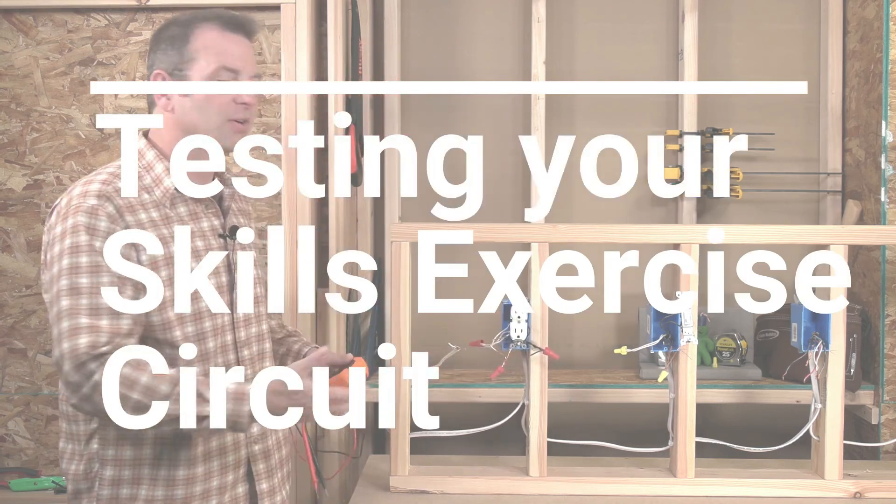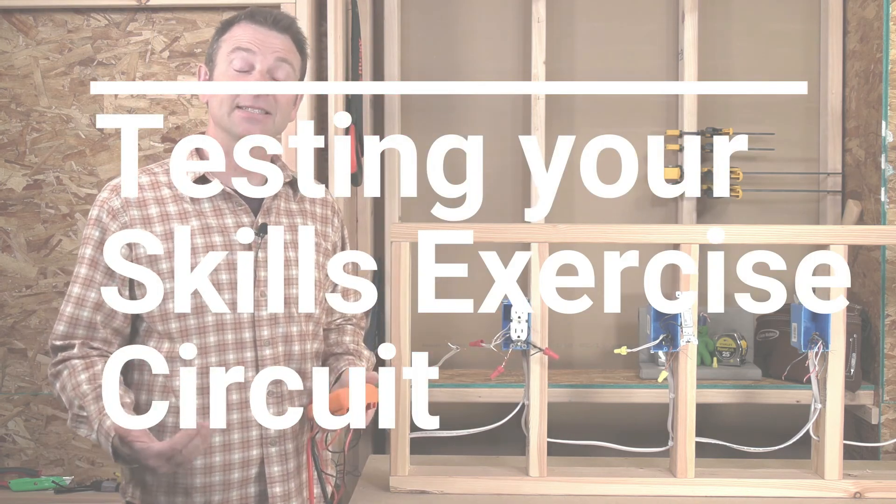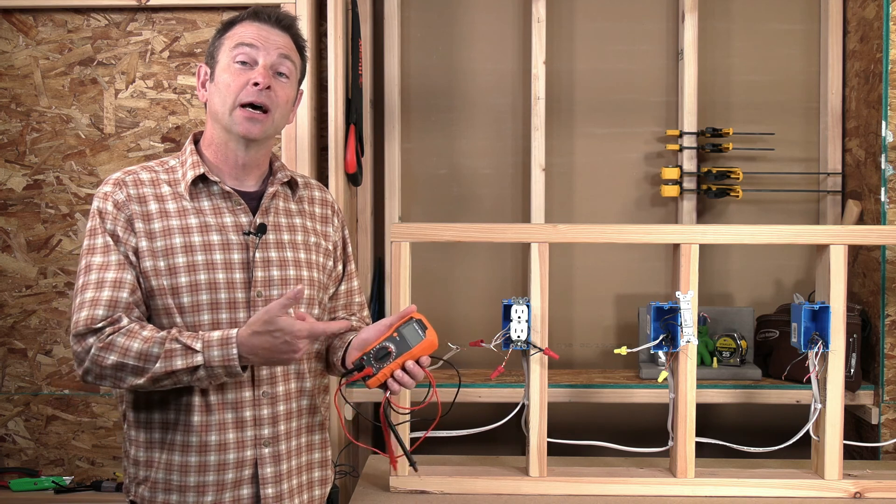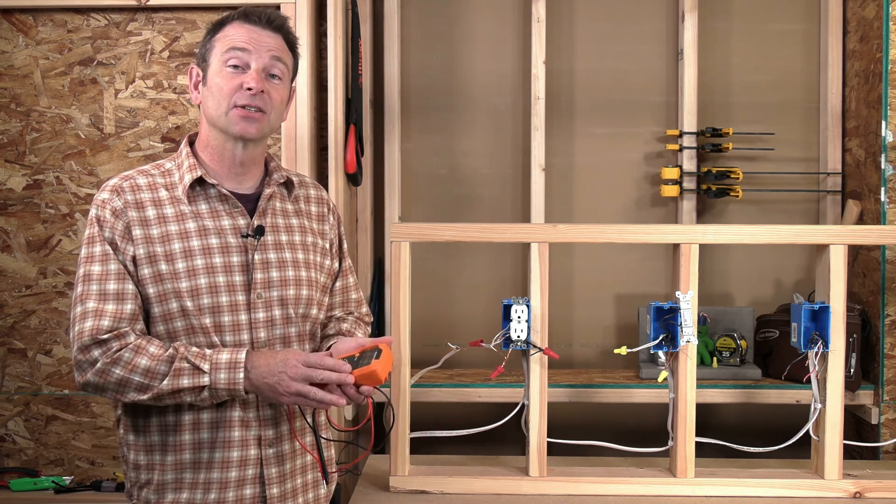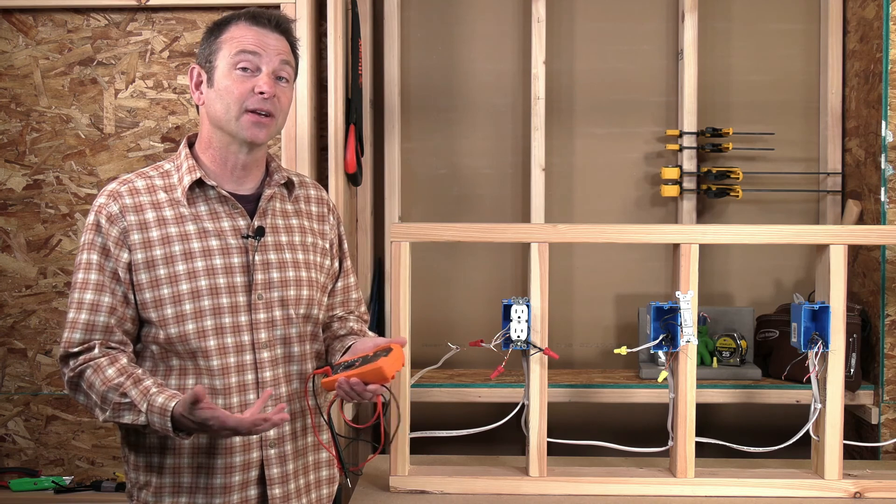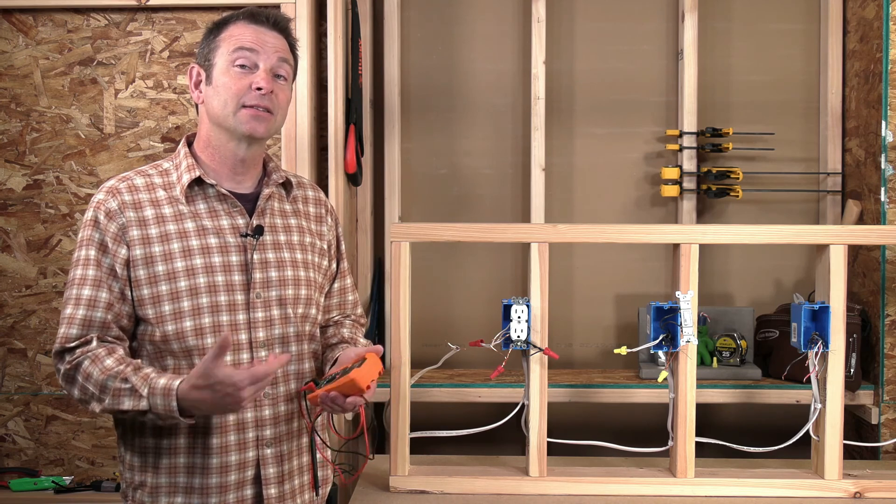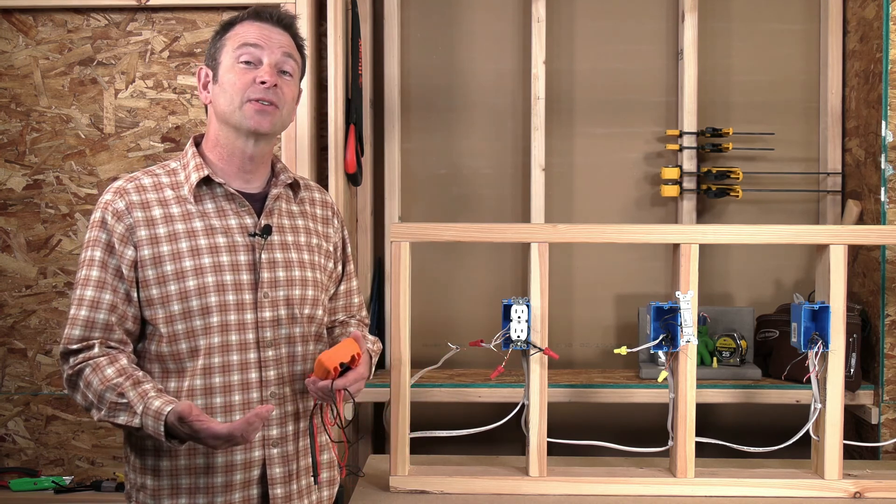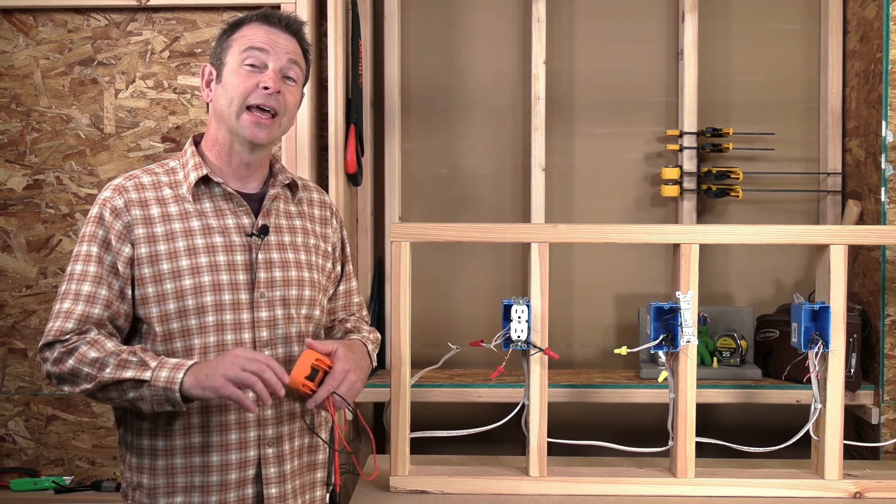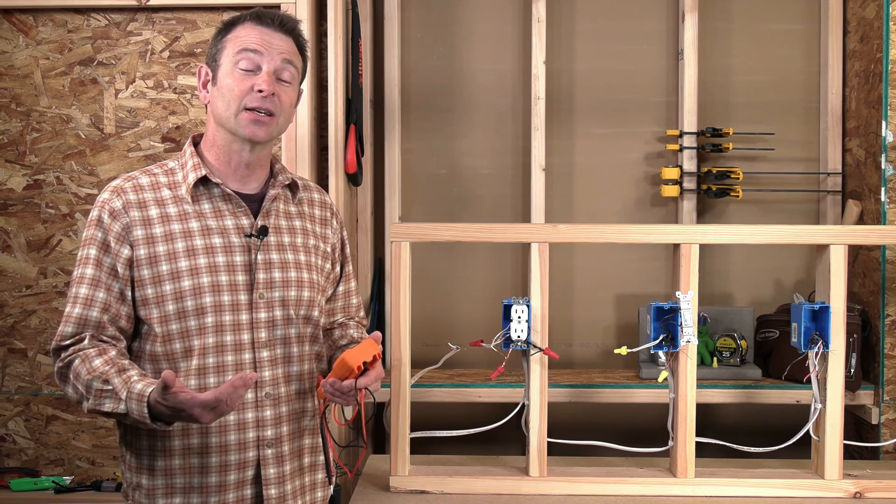So here we are, we've got our circuit finished. It's time to test it. We're going to take what's called a multimeter. This is a tool of an electrician. This is a digital version. They come in a lot of different shapes and sizes. This is a tool that's going to allow us to check our circuit, all of our connections, make sure that everything is hooked up properly and that everything is tight and ready to go.